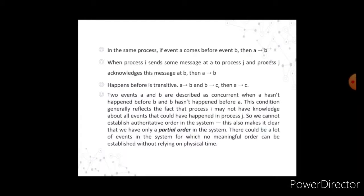Two events A and B are described as concurrent when A has not happened before B and B has not happened before A. This generally reflects the fact that a process may not have knowledge about all events that could have happened in another process. So we cannot establish an authoritative order in the system. There could be many events for which no meaningful order can be established without relying on physical time.